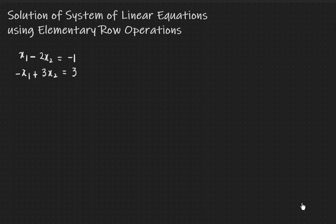We have already discussed this system of linear equations in the previous video, where we tried to solve it using the simultaneous solution procedure and the graphical procedure. In the simultaneous solution procedure, we found the value of x1 from the first equation in terms of x2, substituted into the second equation to get x2, then back-substituted to get x1. We found that x1 equals 3 and x2 equals 2.